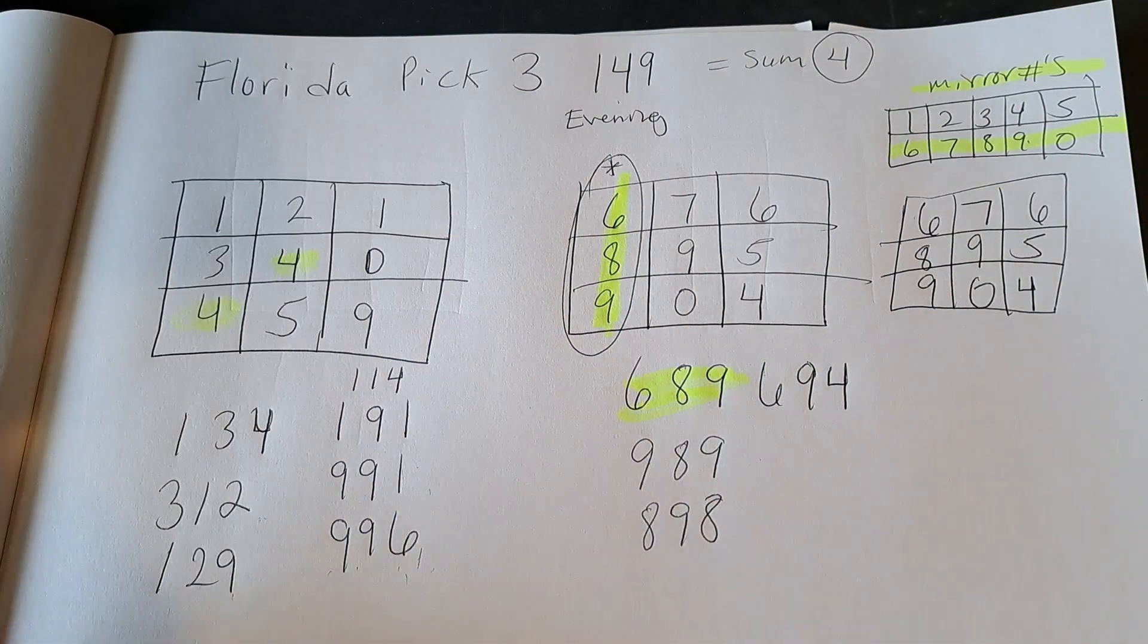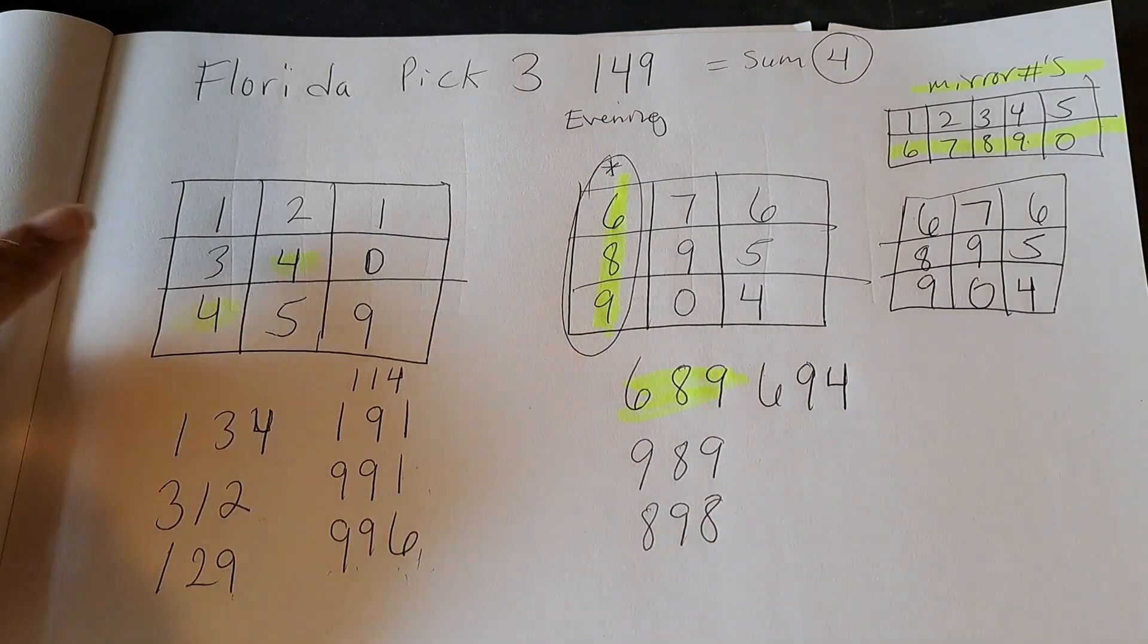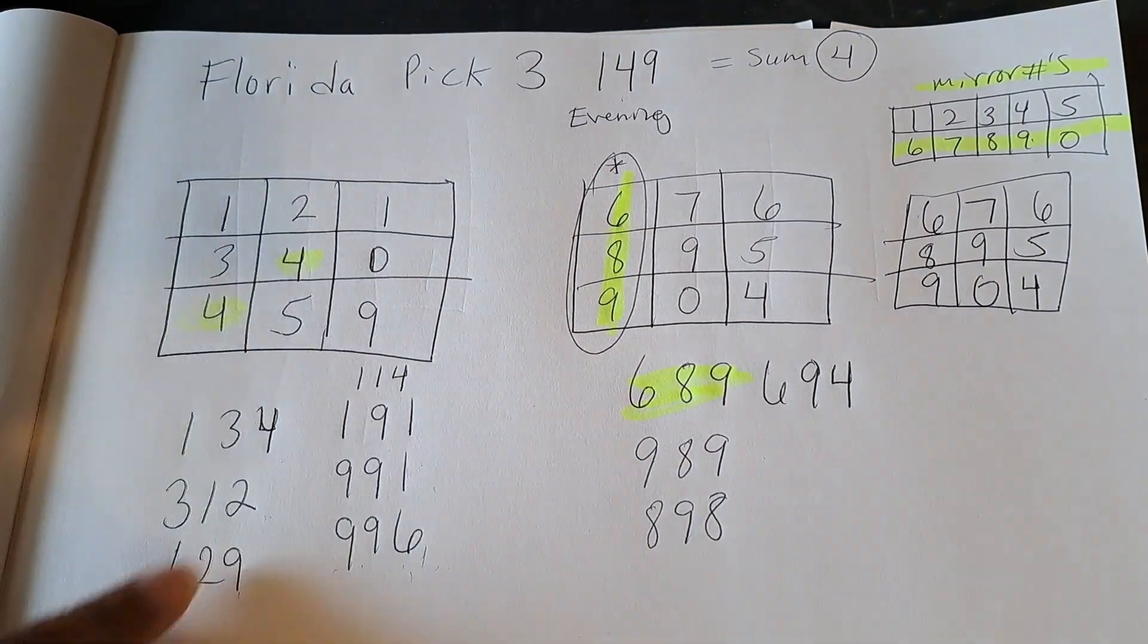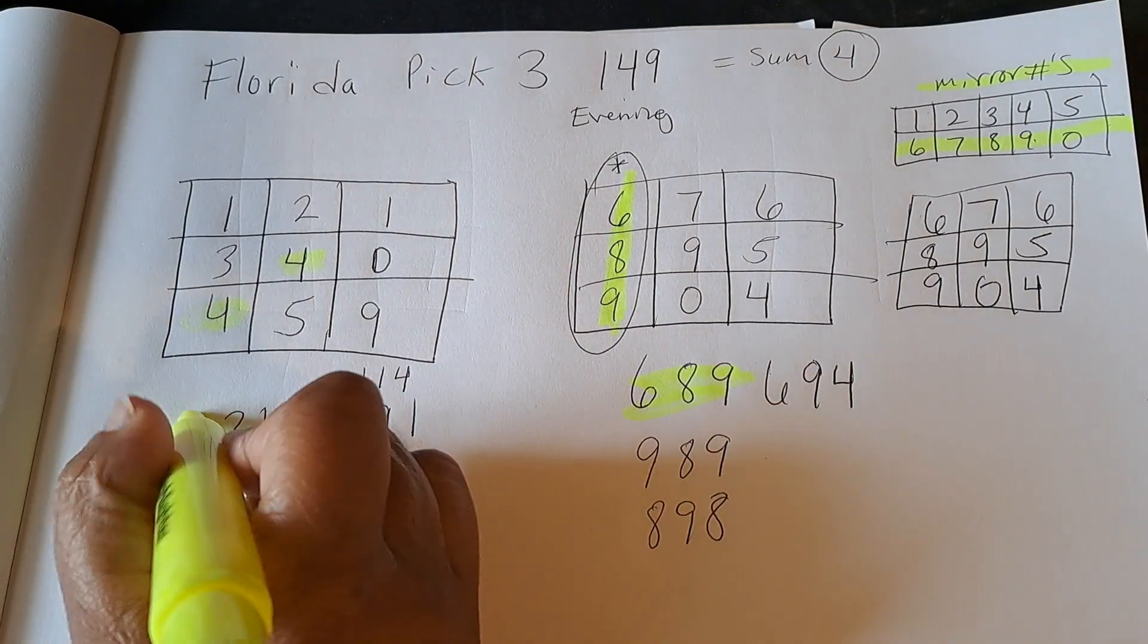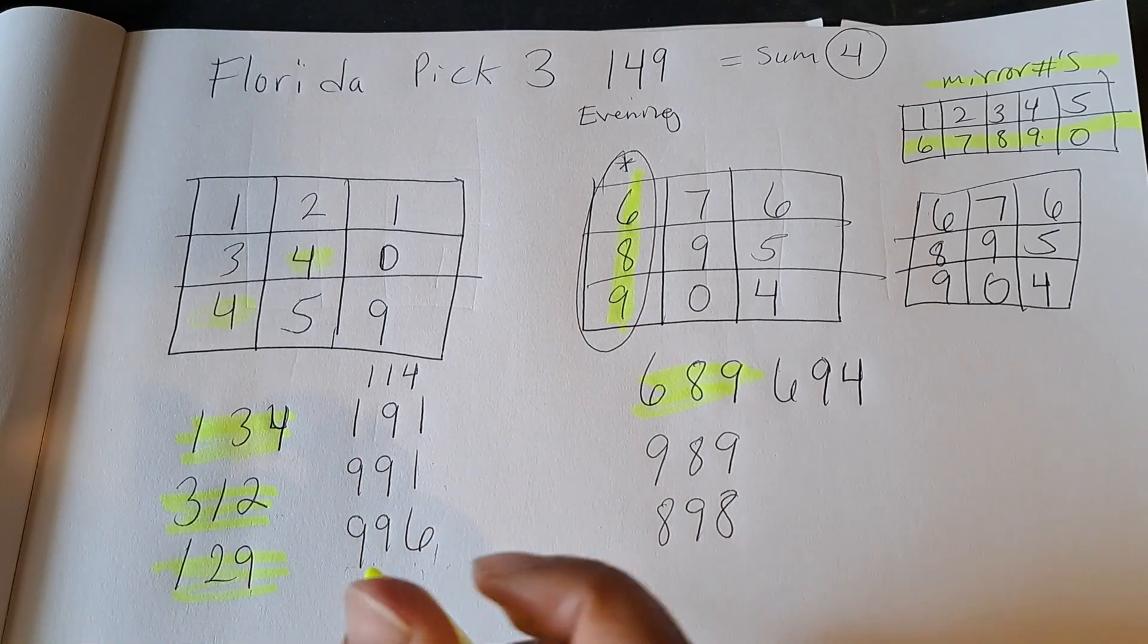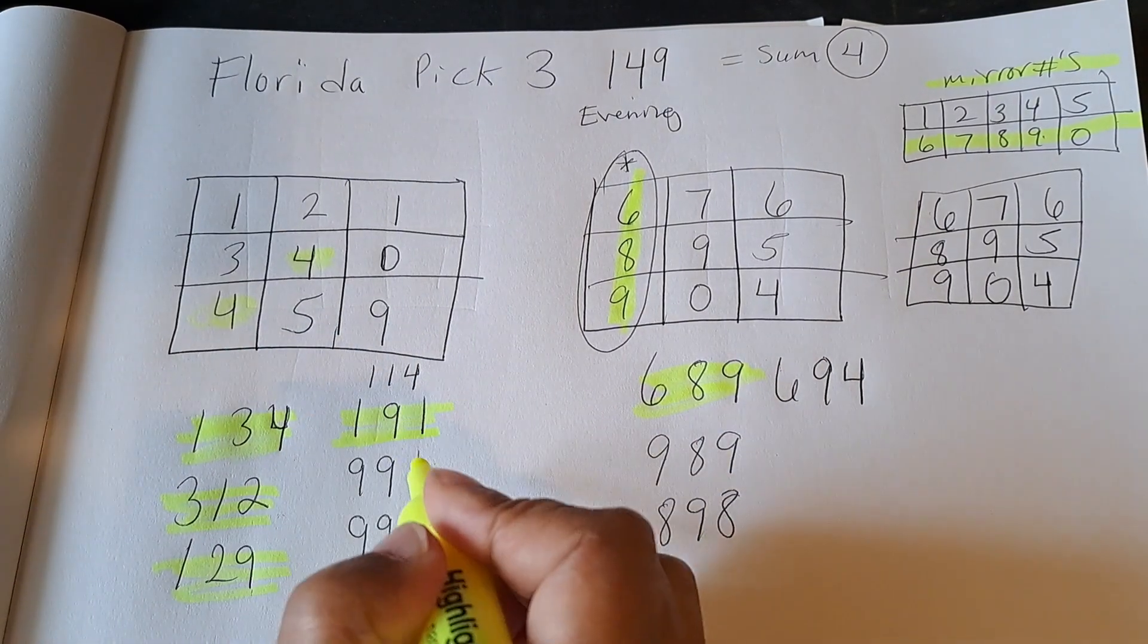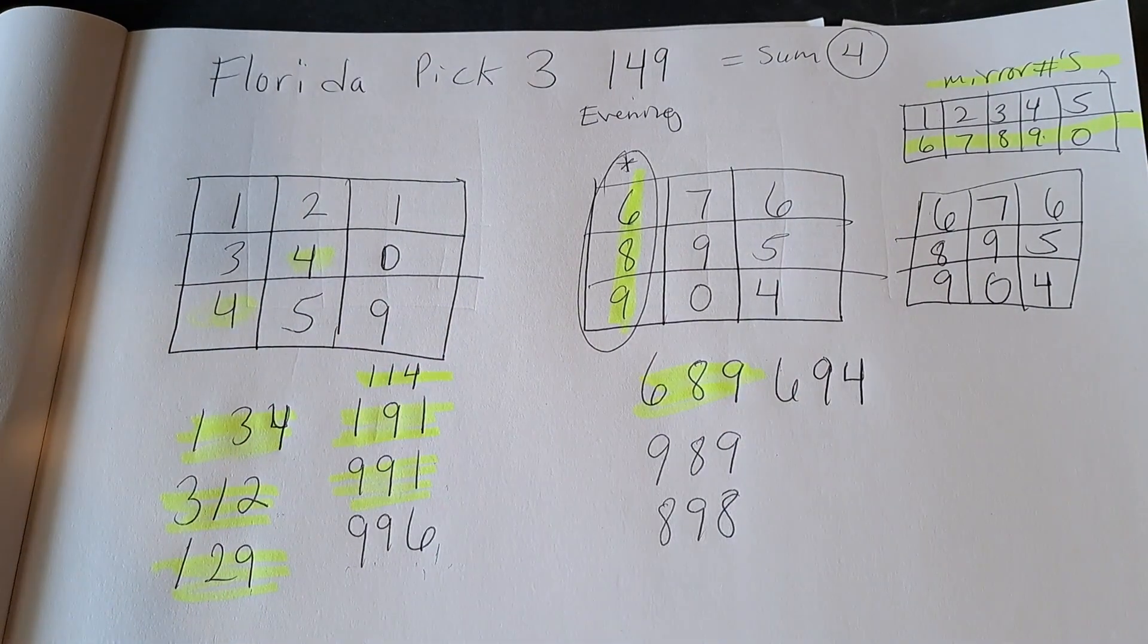So also the numbers that I jotted down, some numbers that I like from this tic-tac-toe and as well as the mirror number tic-tac-toe. Really liking the 134 and 312 and this 129. And the double 191 and 991 is good and that 114.